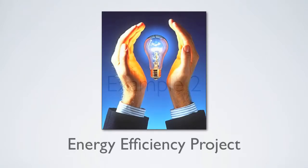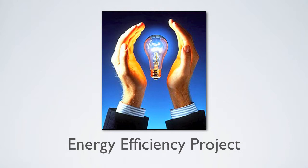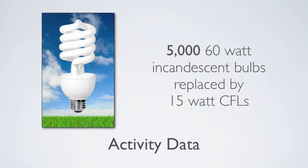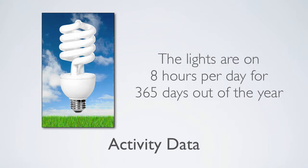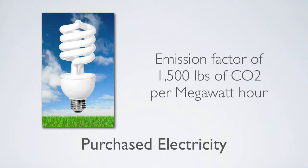Example 2. Let's take a look at another example, this time from an energy efficiency project. Today, many companies are replacing their lighting fixtures with newer, more efficient lighting to save money and reduce their impact on the environment. In this example, a factory replaced 5,000 60-watt incandescent bulbs with 15-watt compact fluorescents. The light bulbs are used 8 hours per day, 365 days a year, and the factory purchased electricity from a utility with an emission factor of 1,500 pounds of CO2 per megawatt hour.